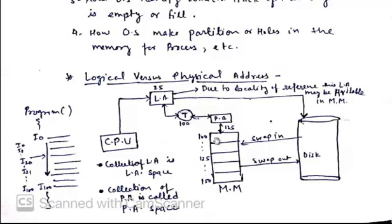The partitions are made in RAM in different ways: contiguous memory allocation, non-contiguous memory allocation, fixed-size allocation, and variable-size allocation.